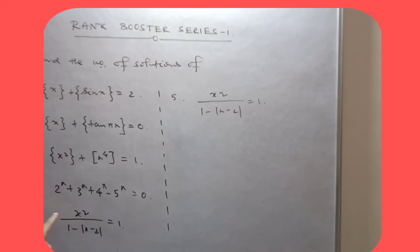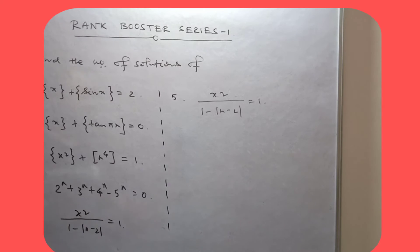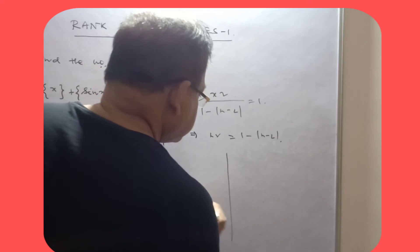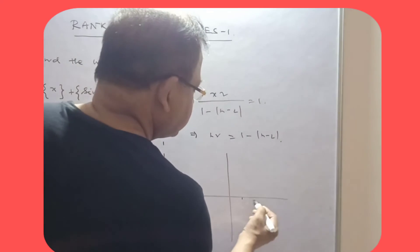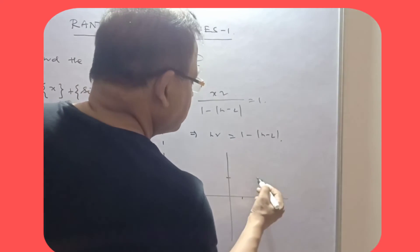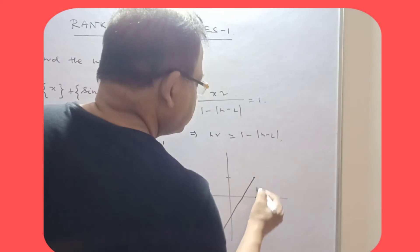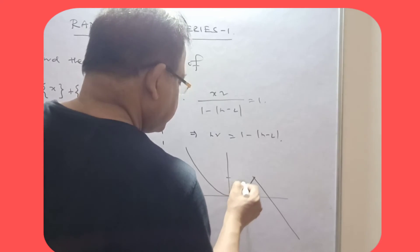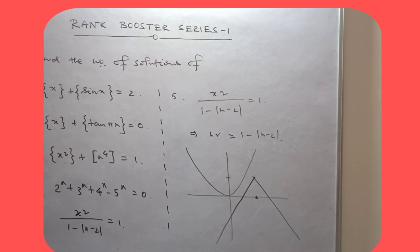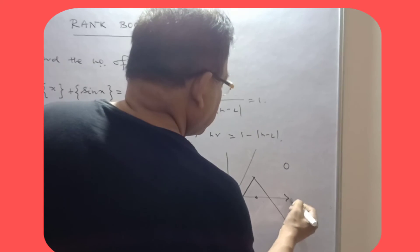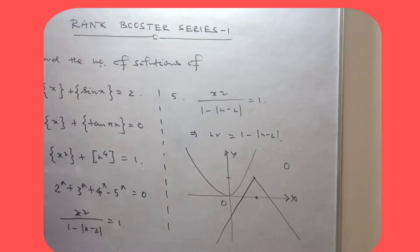Now the number of solutions of x² = 1 − (x − 2). Abhi iska graph kaisa hoga? The graph of 1 − (x − 2) is the line x − 2 shifted 1 unit up. And the graph of y = x² is the standard upward parabola. These two curves never intersect, so the number of solutions is 0. Just simply apply your presence of mind. This type of question is generally asked in JEE Advanced exams.